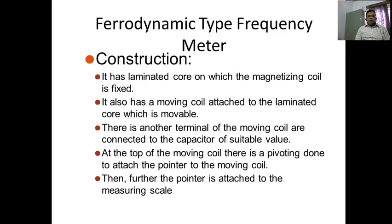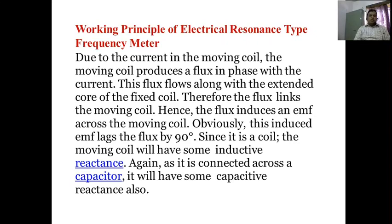The ferrodynamic type frequency meter has a laminated core on which the magnetizing coil is fixed, and also has a moving coil attached to a movable laminated core. Another terminal of the moving coil is connected to a capacitor of suitable value. The pointer is attached to the measuring scale, so we can see how the working principle of the electric resonance type frequency meter occurs.